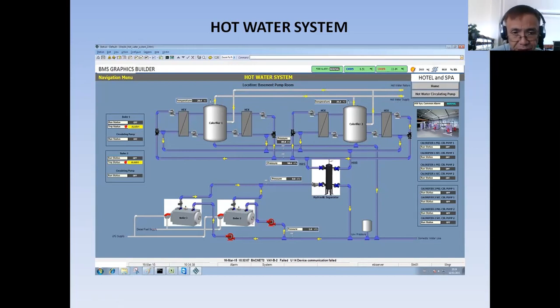As you can see here, I have two calorifiers and I have four heat exchangers. You know already what's the purpose of heat exchanger. I have two boilers here, one duty and one standby, then I have two water supply and I have a separator, hydraulic separator that separates the air and some of the dirt that might enter the boiler water supply.